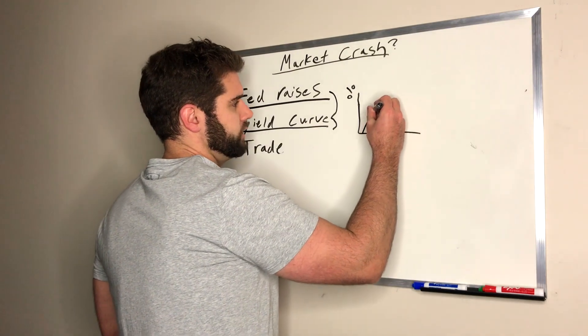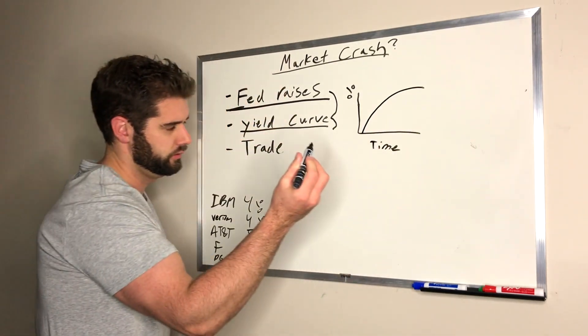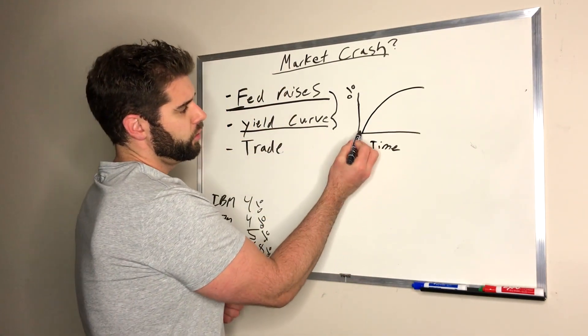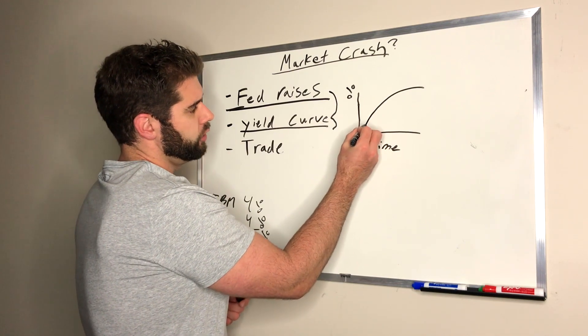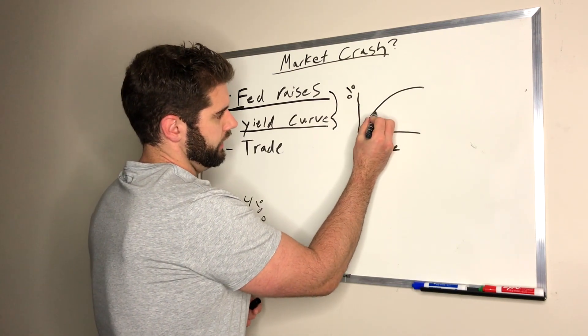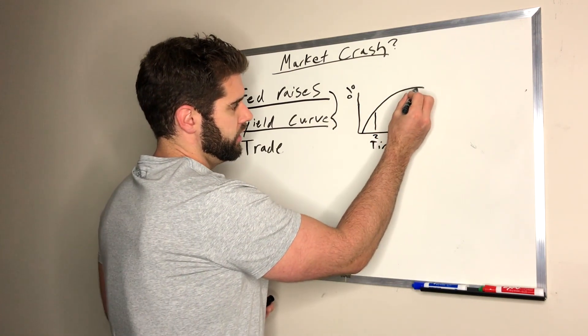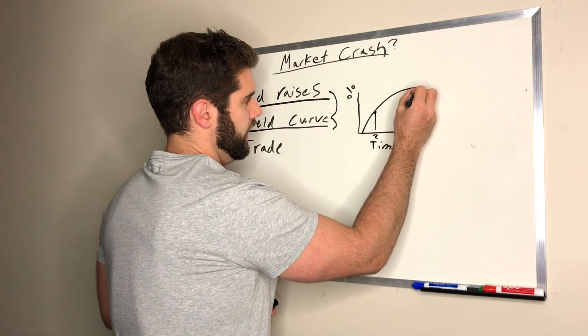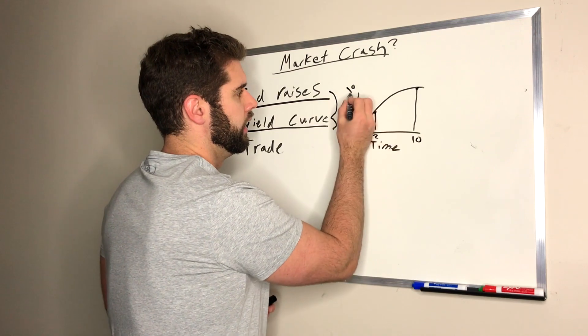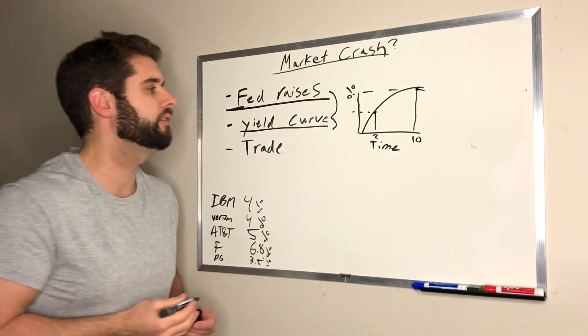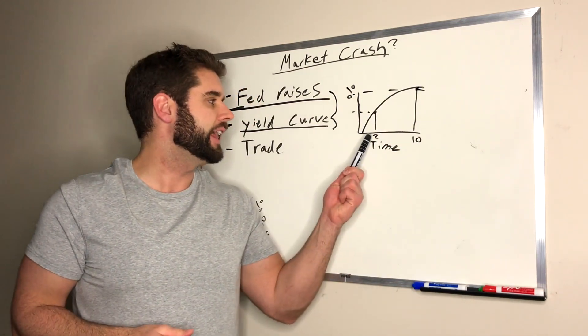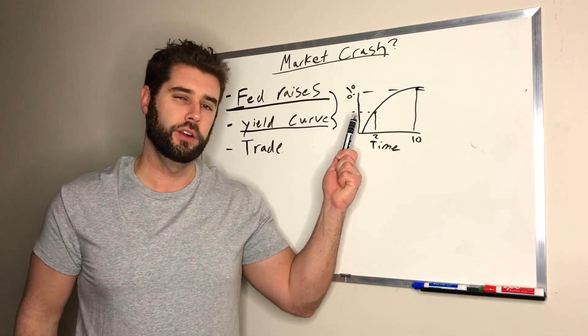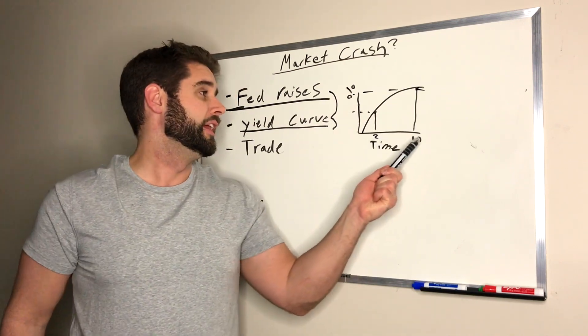So this is time to maturity. If you're not aware of what a bond is, go back and watch my other video. I'll put a link to that right now, and I explain what a bond is. But usually the yield curve will look something like this. We're not going to get too much into detail on the yield curve. So shorter time periods, you're going to have a lower interest rate.